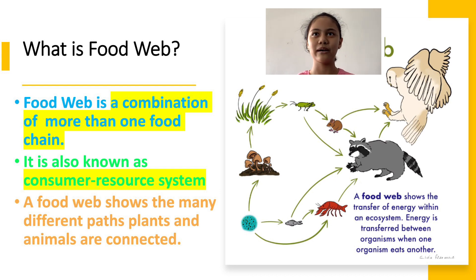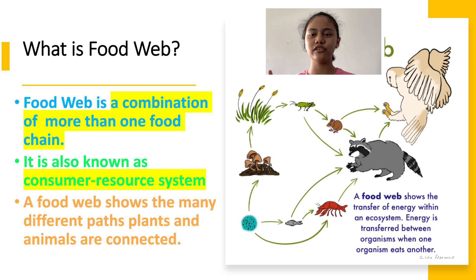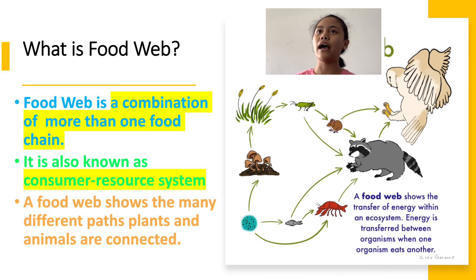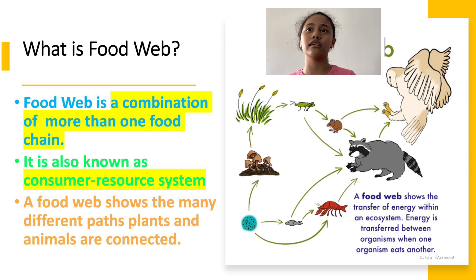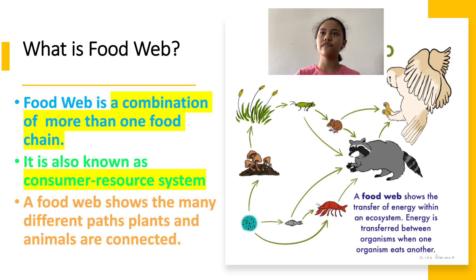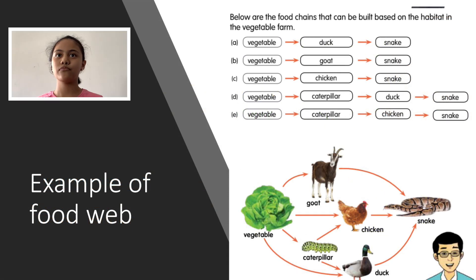Now let me explain about Food Web. What is a Food Web? A Food Web is a combination of more than one food chain. It is also known as a consumer-resource system. A Food Web shows the many different paths that plants and animals are connected. As you can see, the picture is an example of a Food Web. A Food Web also shows the transfer of energy within an ecosystem. Energy is transferred between organisms when one organism eats another.